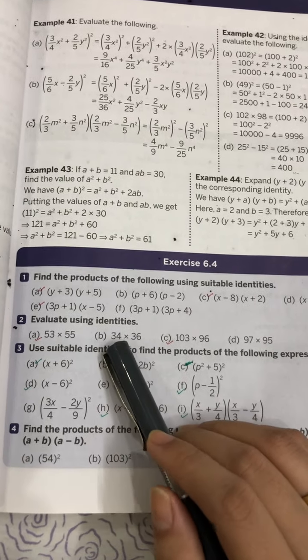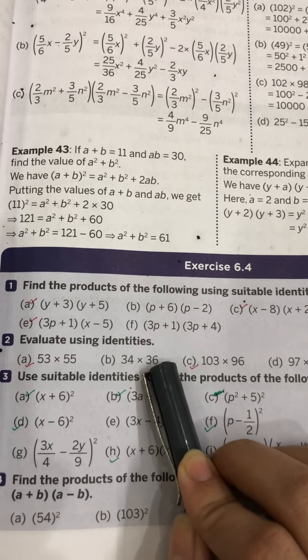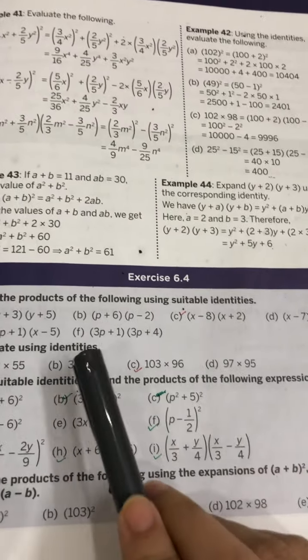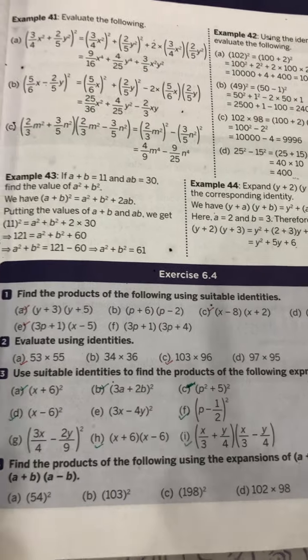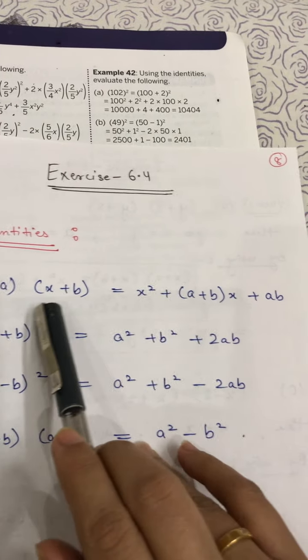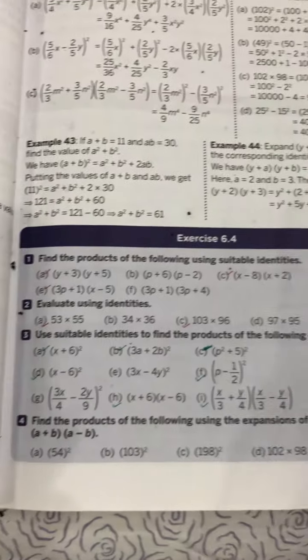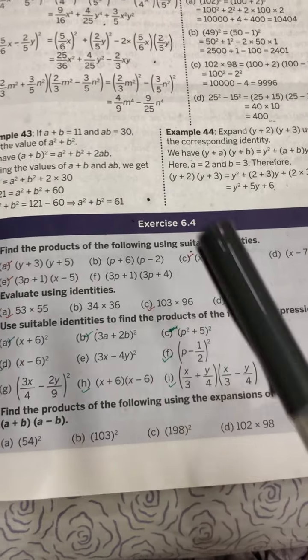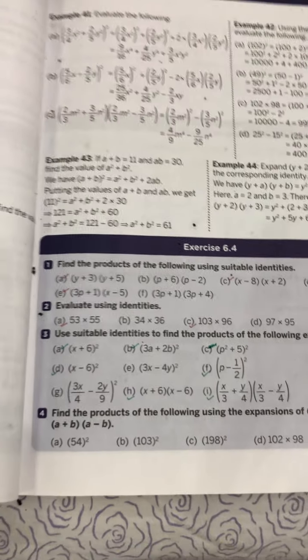For homework, part b of question two: 34×36 = (30+4)(30+6). From question one, parts b, d, and f are also given for homework — they are similar to the questions we solved. In this lecture we covered questions one and two using identity one: (x+a)(x+b) = x² + (a+b)x + ab. The remaining identities will be discussed in the next lecture. Do practice in your practice notebook, then write in your fair notebook. Bye bye and take care.